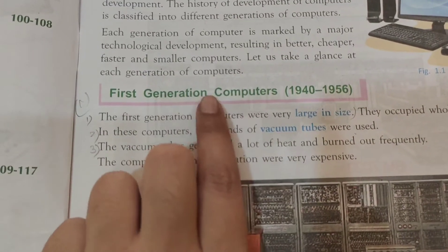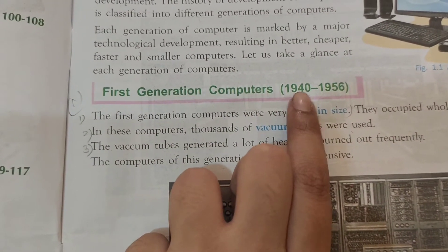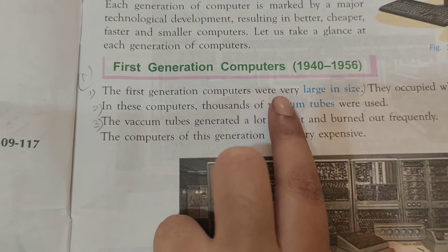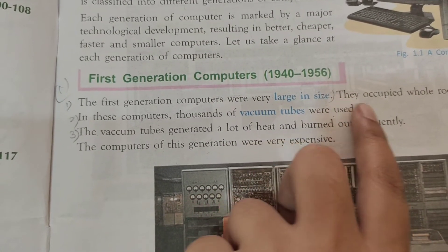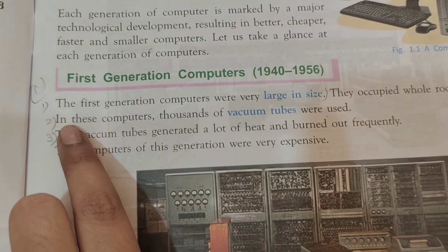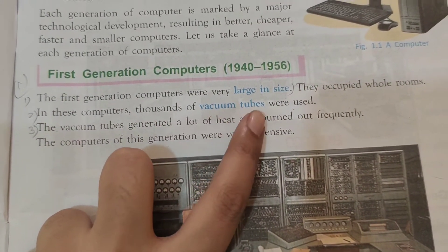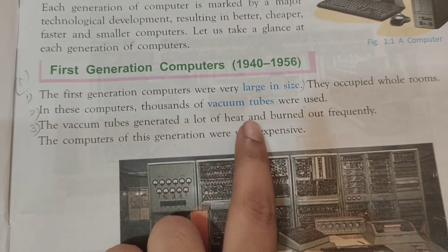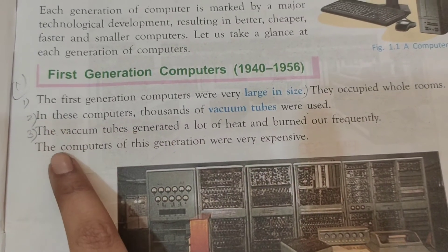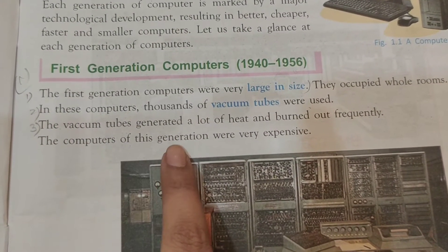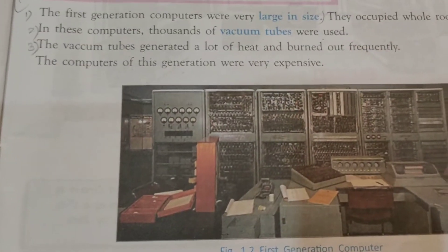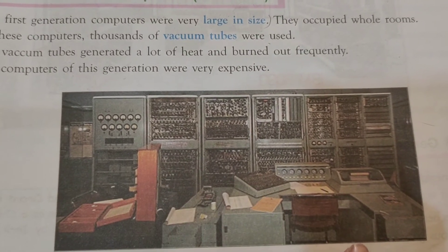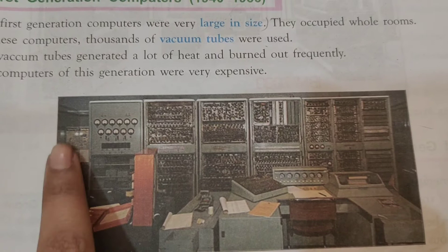Let's start with the first generation computers, which is from 1940 till 1956. The first generation computers were very large in size — they occupied whole rooms. In these computers, thousands of vacuum tubes were used. The vacuum tubes generated a lot of heat and burned out frequently. The computers of this generation were very expensive. Here you can see footage of the first generation computer and see how much space it is occupying.